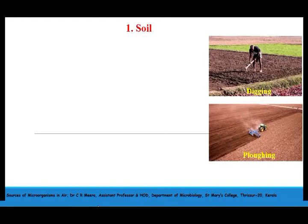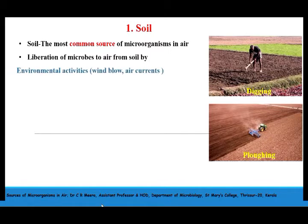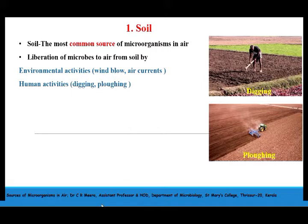The four different sources of microorganisms in air include soil, water, plant and animal surfaces, and human beings. Soil is considered the most common source of microorganisms in air. From soil, microorganisms are liberated to air by various environmental activities as well as by human activities. Environmental activities like wind blow and air currents liberate microorganisms into air, and these organisms will remain suspended for longer periods. Human activities like digging and plowing will also liberate microorganisms from soil to air.